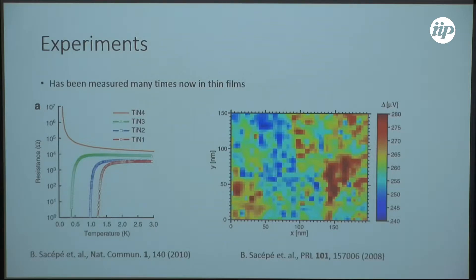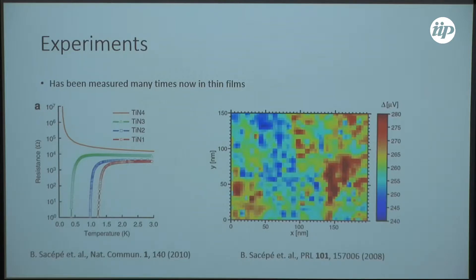We destroy our superconducting state and end up in a phase that is sometimes called superinsulated. To the right — this will be important in the light of our results — we see here a measurement in the superconducting state of the spectral gap with STM measurements, and we see that it's highly inhomogeneous. So also the superconducting phase is different than what we are used to from BCS.